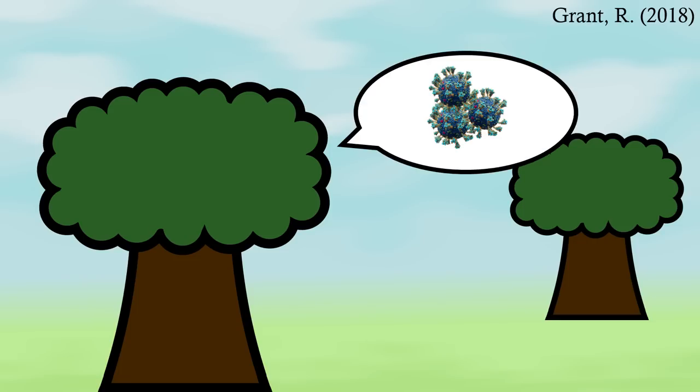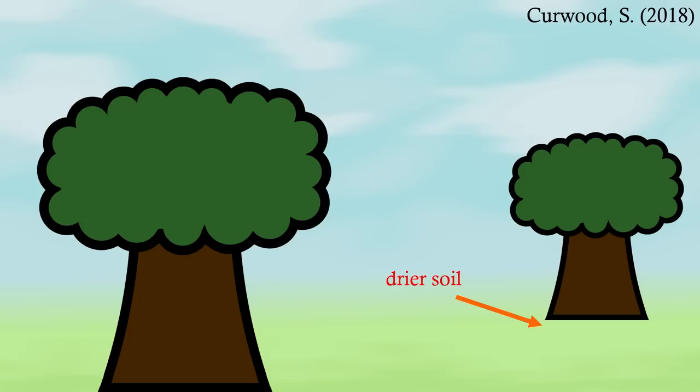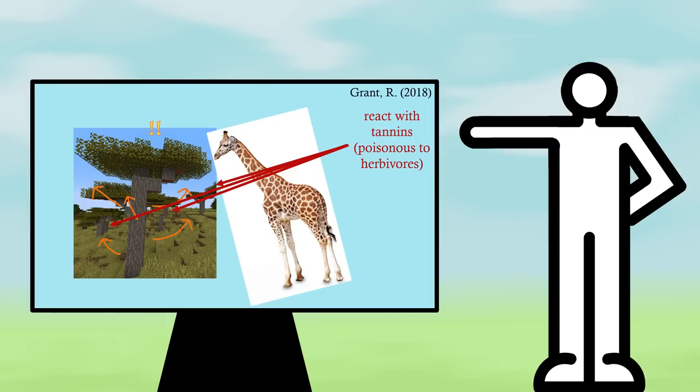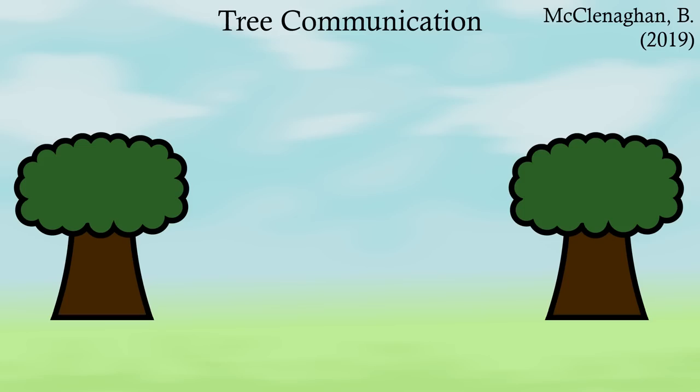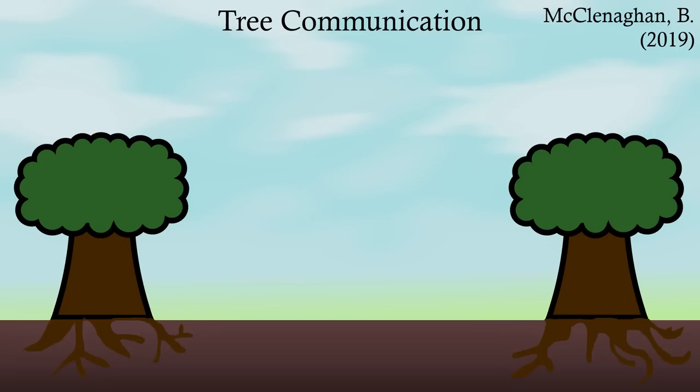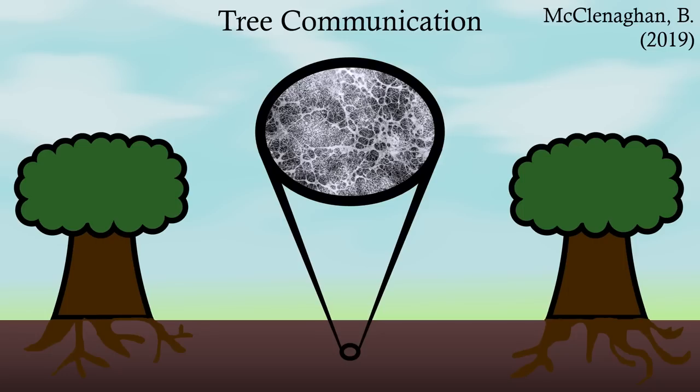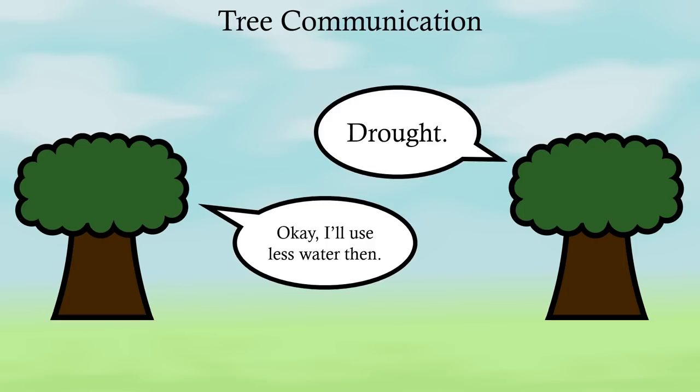They alert each other about diseases, insect attacks, and trees in drier soil will alert others of a coming drought. Urgent messages like a giraffe attack are often sent into the air, but the majority of communication happens under the earth, facilitated by massive networks of fungi which connect the tree roots and transport signals from one to the other. And the trees change how they act based on these signals.